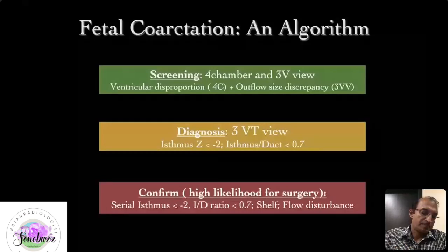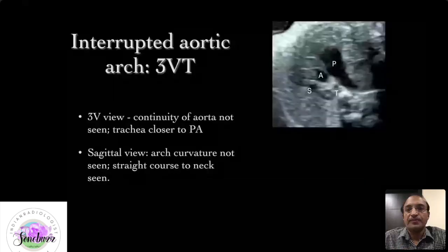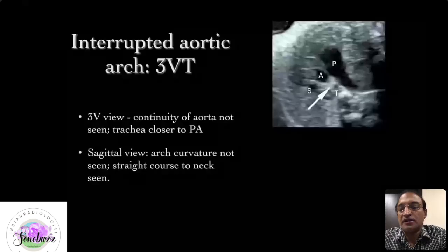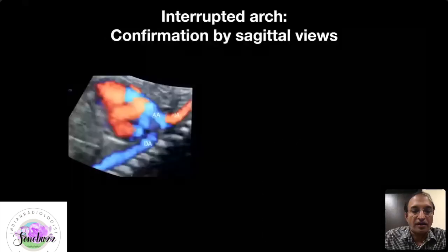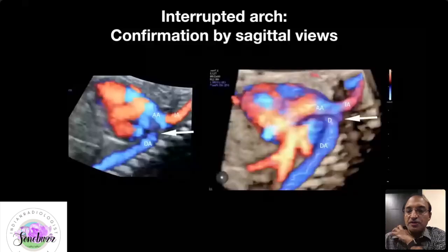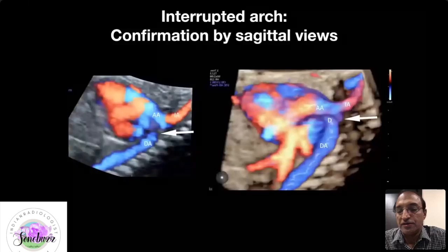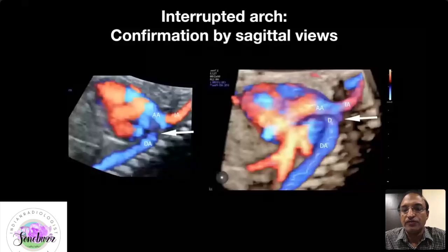If the isthmus becomes smaller and smaller with a shelf, as shown in the sagittal view, it becomes a confirmatory diagnosis. The elder brother of aortic coarctation is interrupted aortic arch, where only the PA and the ductal arch continue down. The ascending aorta just continues into the head and neck as the innominate artery. In the sagittal view you see the complete interruption — the ascending aorta is completely stopping after the innominate artery.